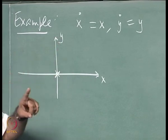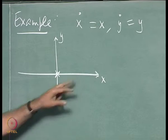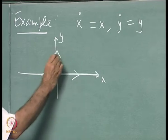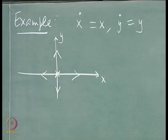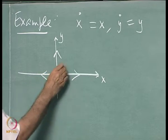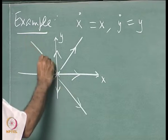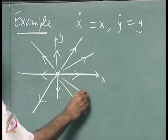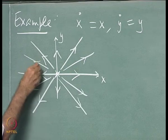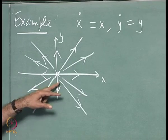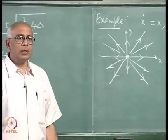Starting anywhere in the plane, the trajectories flow outward in this fashion. The phase portrait is exceedingly simple — a set of lines flowing out in all directions. The stability of this critical point is unstable, and this kind of critical point is called an unstable node.